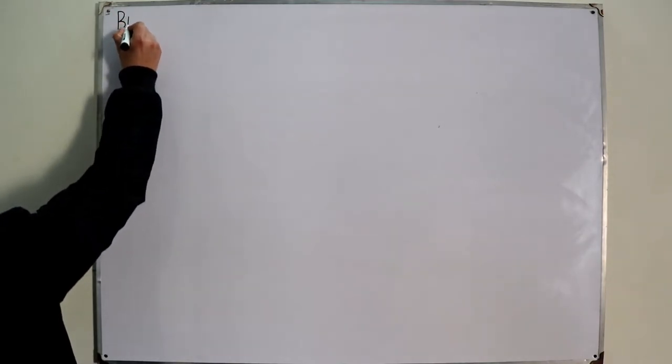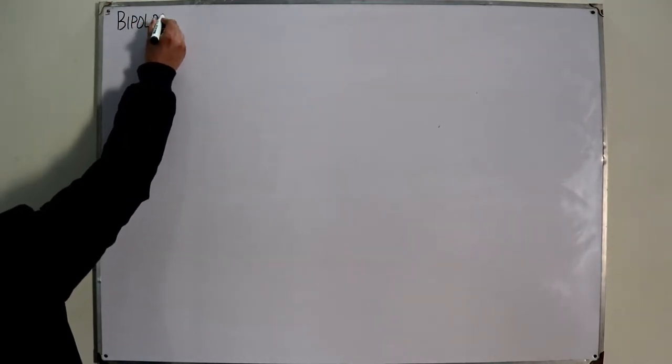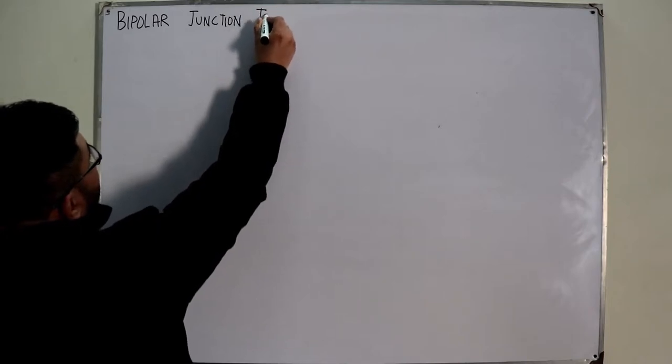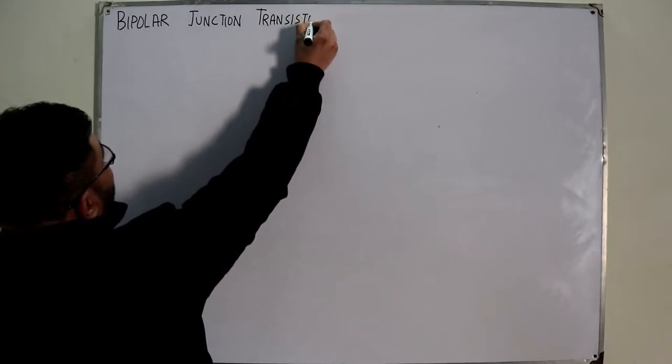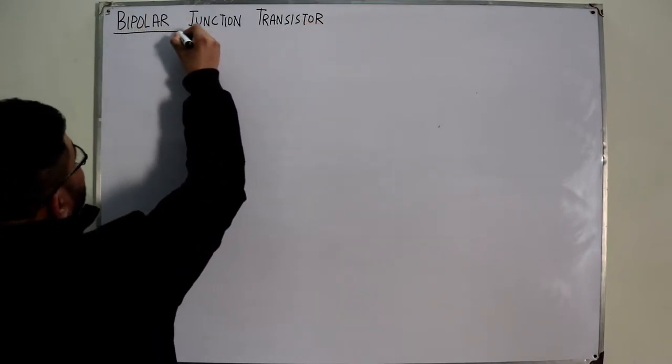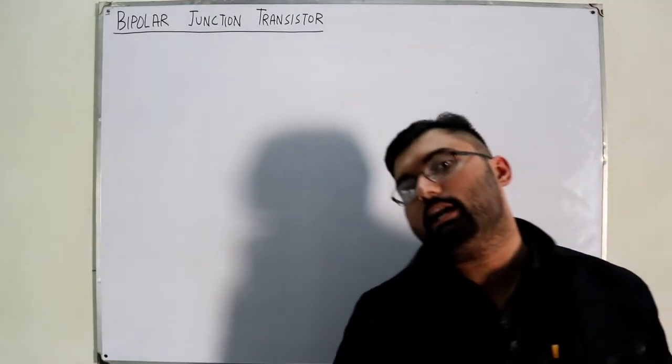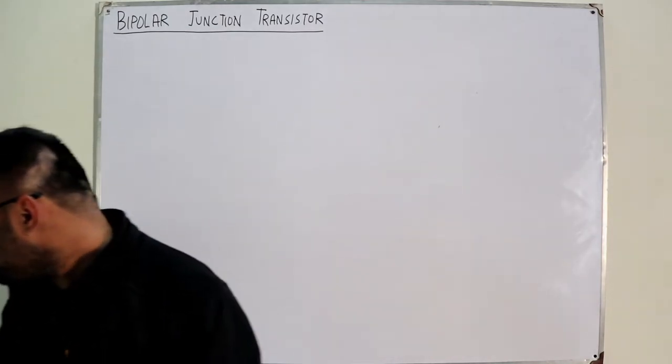Bismillahirrahmanirrahim. Assalamu alaikum, Salah Khan here, welcome back to the channel. Today we start a new topic - chapter number three of the book: Bipolar Junction Transistors. It's a small chapter with three or four topics but very important to understand. Also, my birthday is the third of February, so if you're watching around that time, wish me a happy birthday in the comment section.